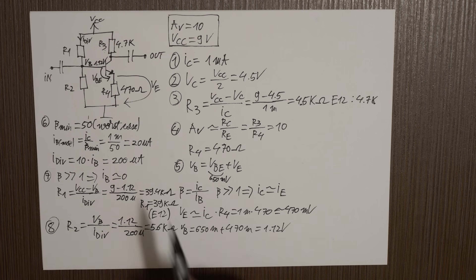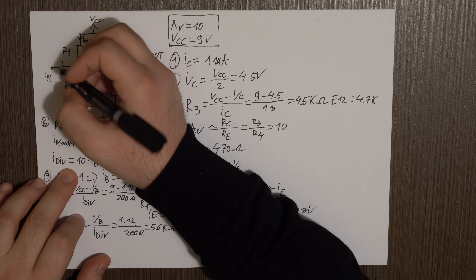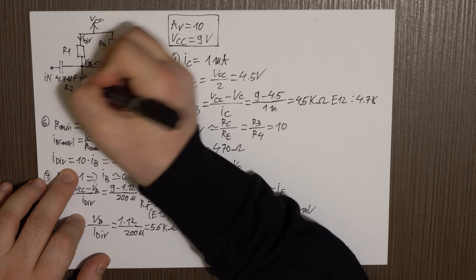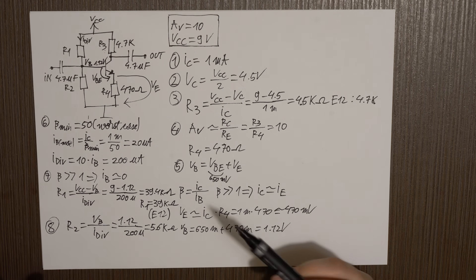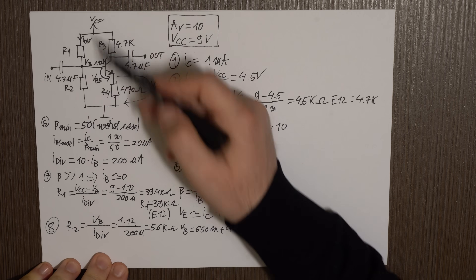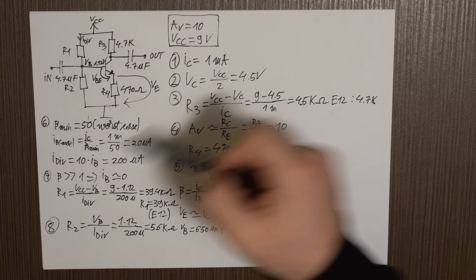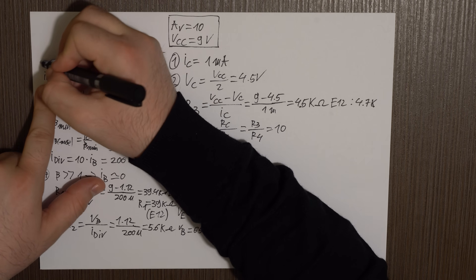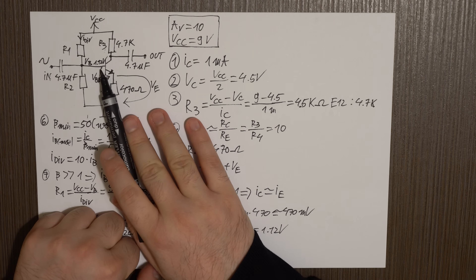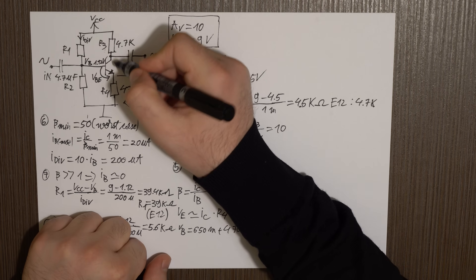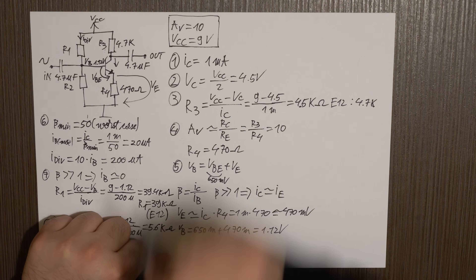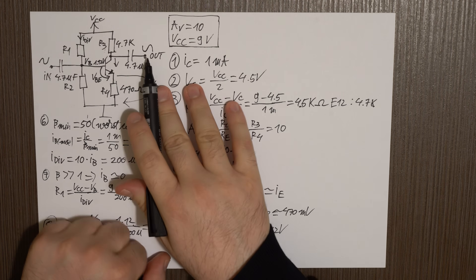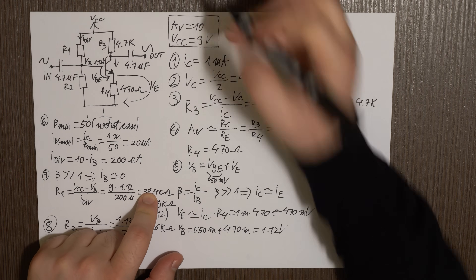In order for this circuit to work, we need coupling capacitors for the input and output. We'll use reasonable values of 4.7 µF for both. Based on the minimum frequency you want to amplify, you can calculate these capacitors properly, taking the input impedance and the next stage's input impedance into account — but let's keep things simple for now. Also, don't forget that this is an inverting amplifier. As you increase the base voltage, you increase the collector current, which pulls the collector node down, so the output is inverted with respect to the input. The voltage gain is therefore minus 10.